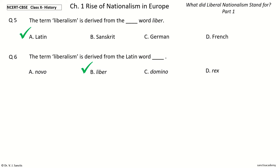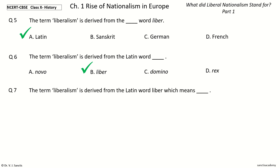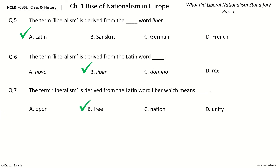Question 7. Last question. The term liberalism is derived from the Latin word liber which means dash. The options are: open, free, nation, unity. And the answer is free. So, the term liberalism is derived from the Latin word liber which means free.